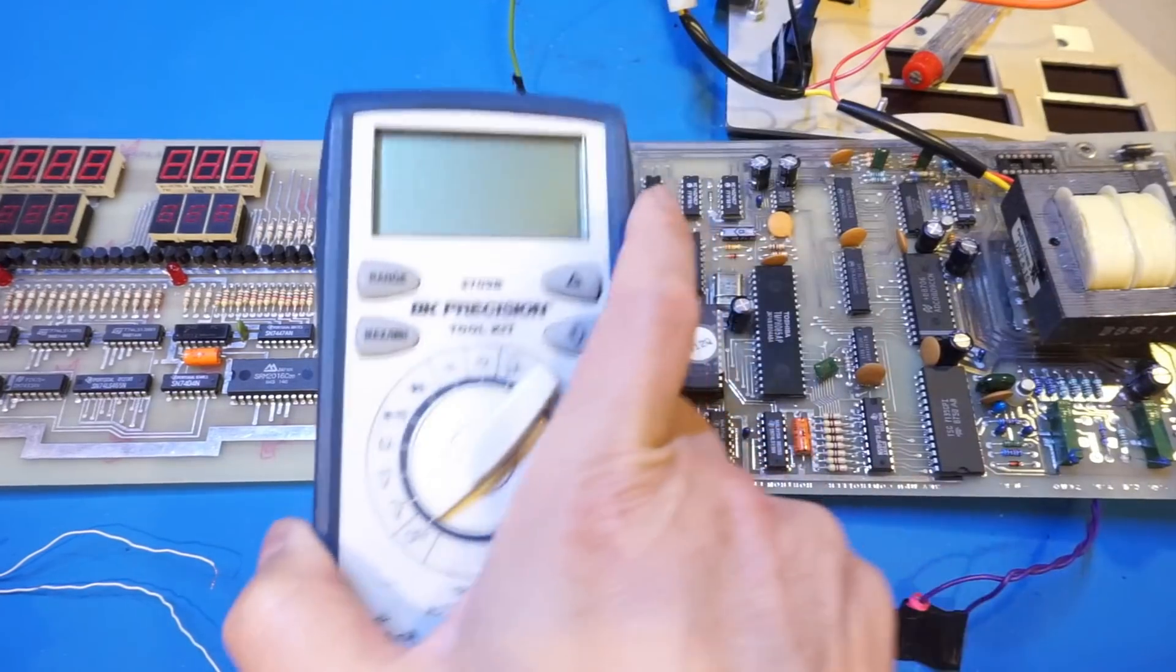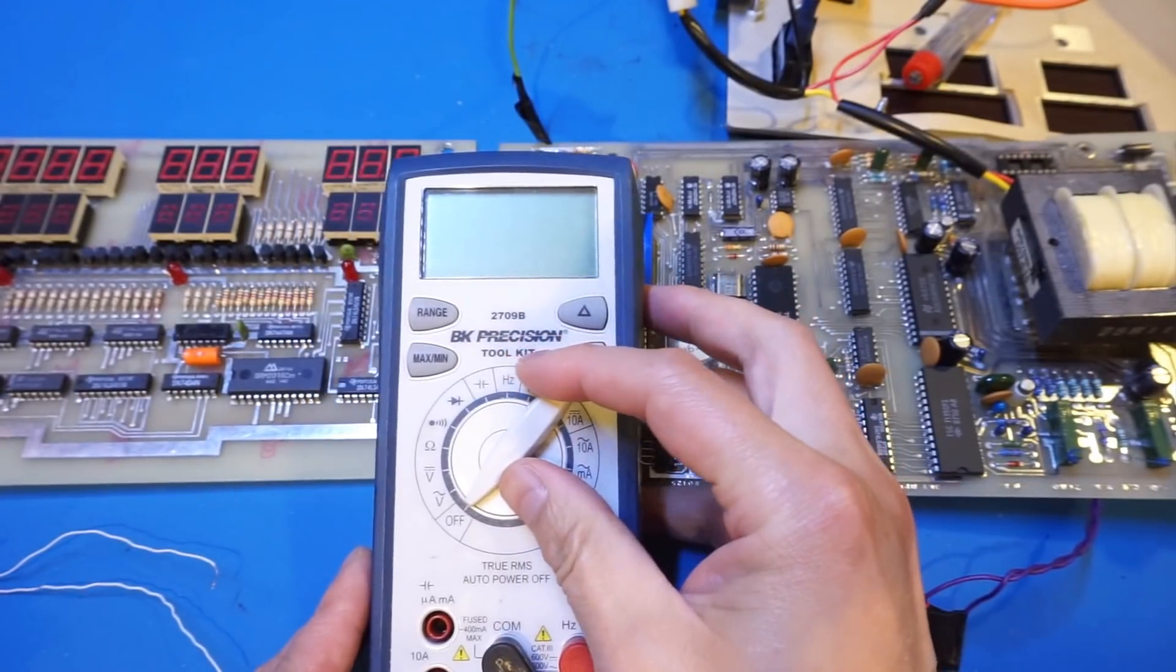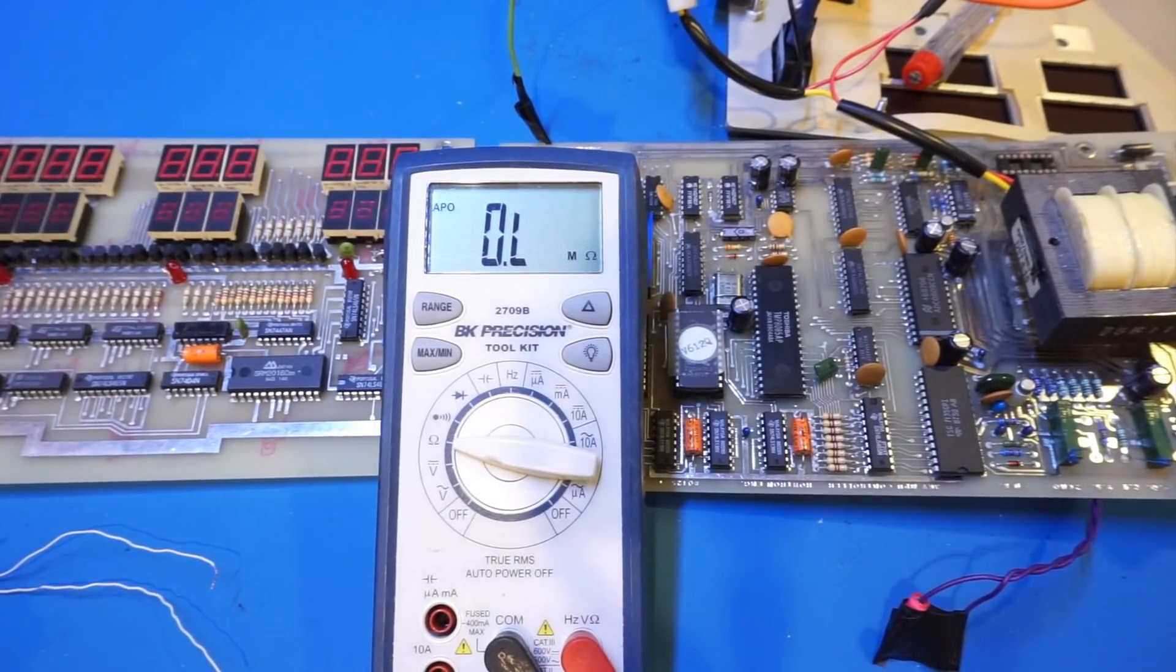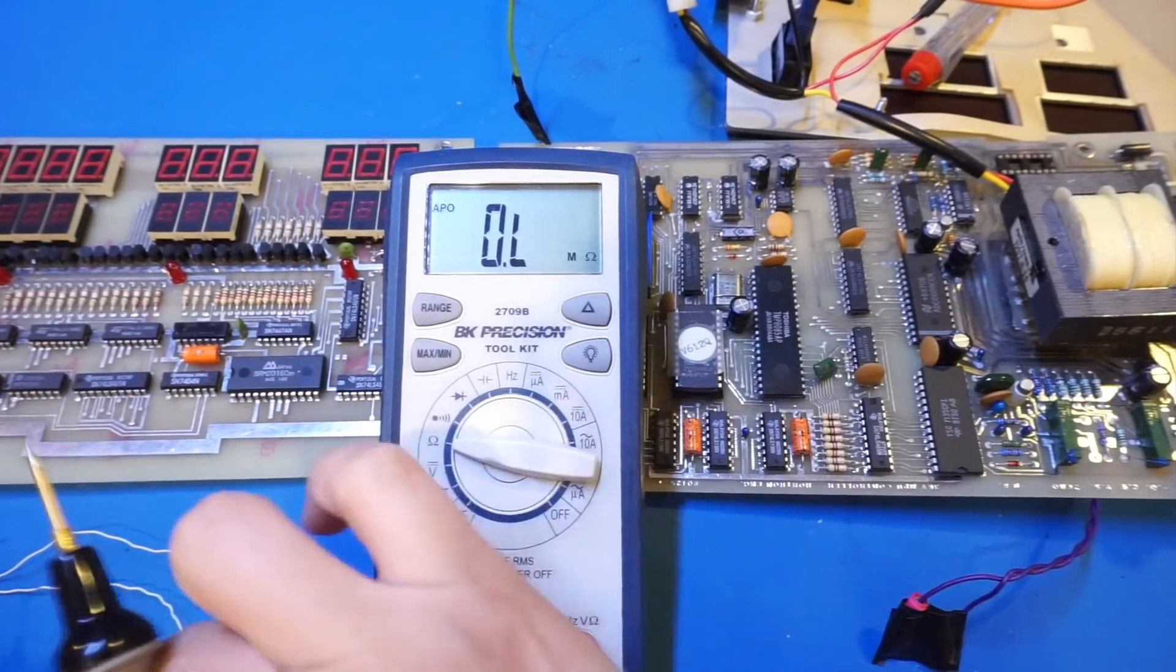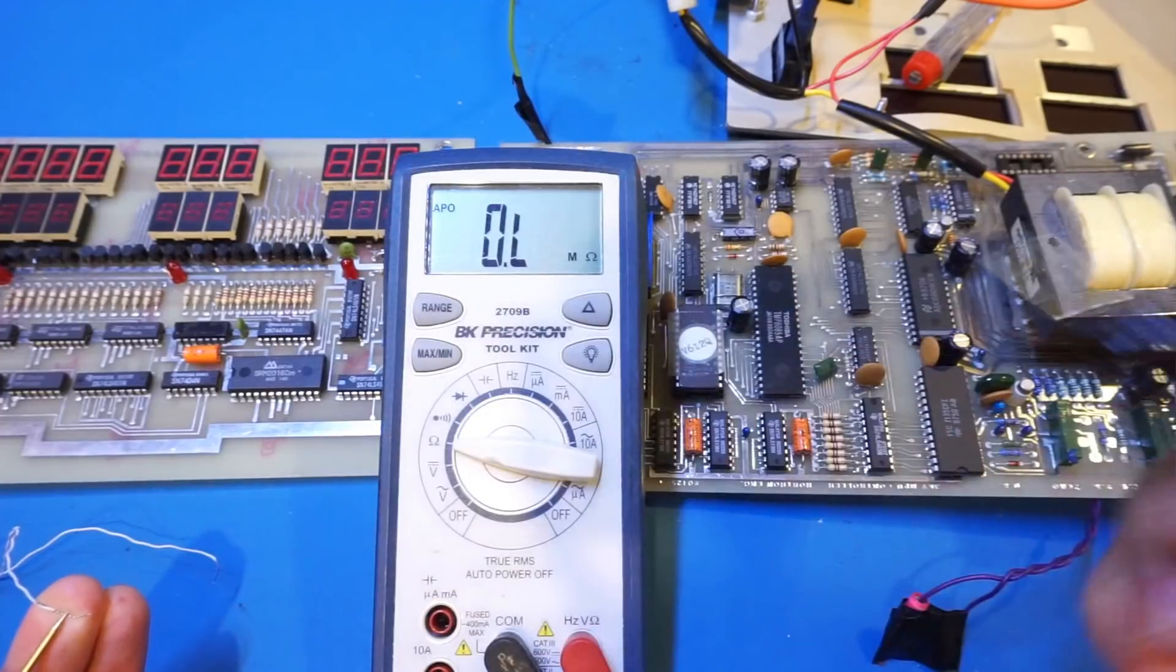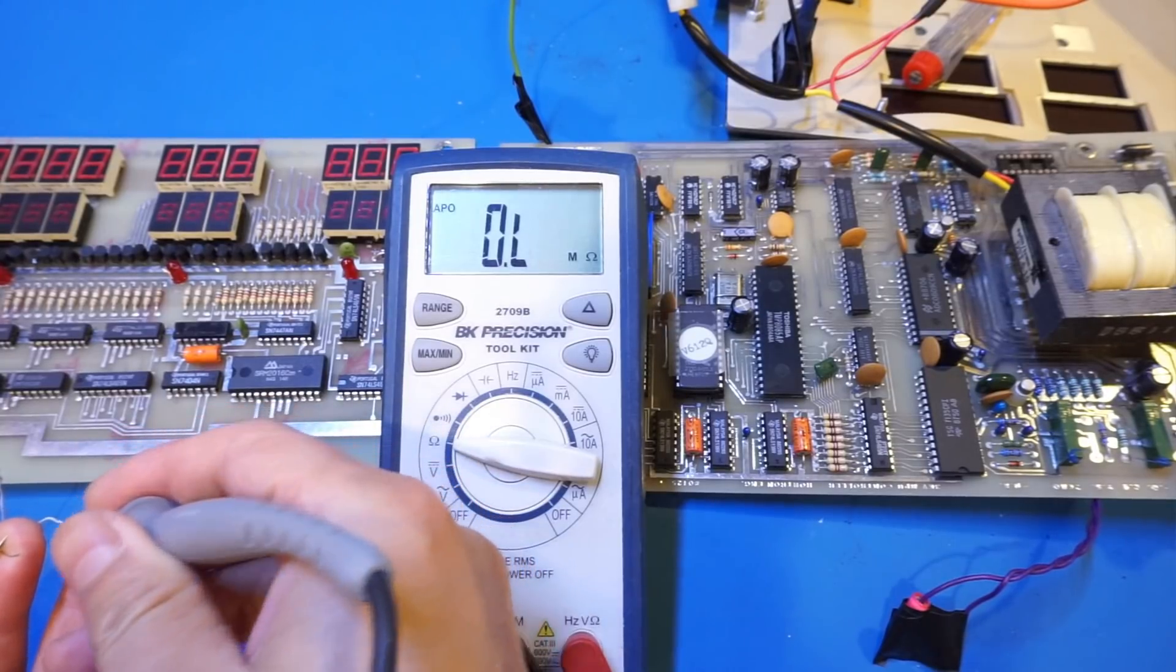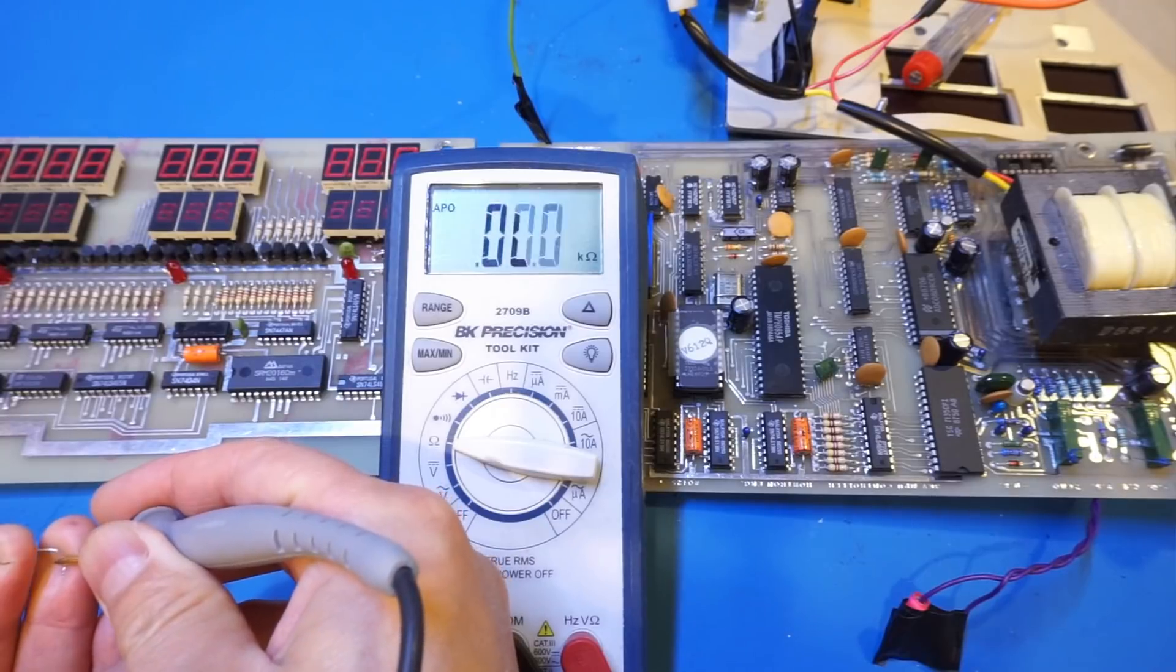So here I have my BK Precision 2709B multimeter. I'm going to place it here, set it to ohm mode, and the device I'm going to measure is just right outside this viewing area, which I'm going to deliberately hide. It has two leads, obviously it's a two terminal device.